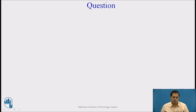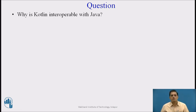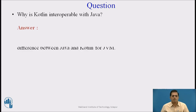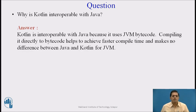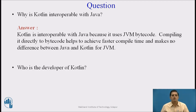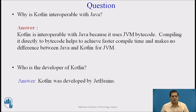Pause the video and answer this question: Why is Kotlin interoperable with Java? The answer: Kotlin is interoperable with Java because it uses JVM bytecode. Compiling directly to bytecode helps achieve faster compile time and makes no difference between Java and Kotlin for the Java runtime machine. Next question: Who is the developer of Kotlin? Answer: Kotlin was developed by JetBrains.